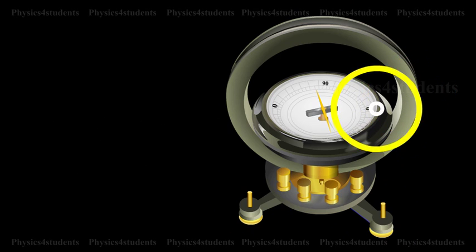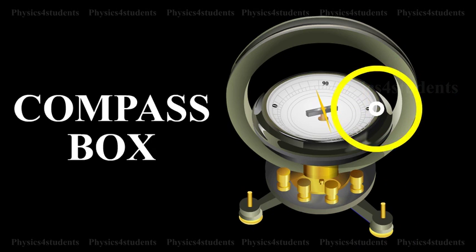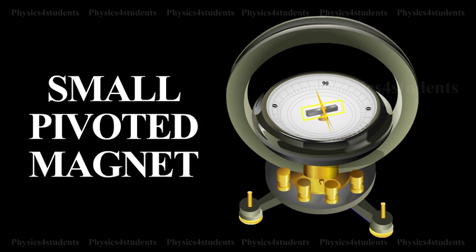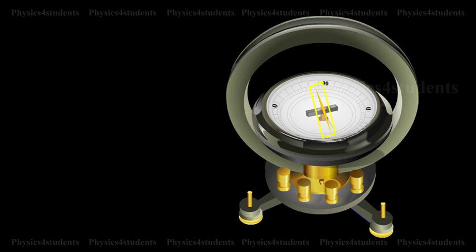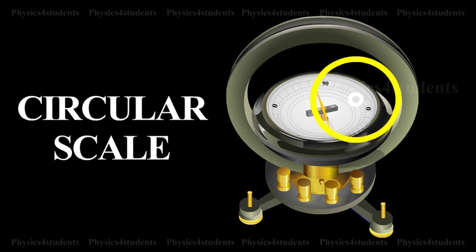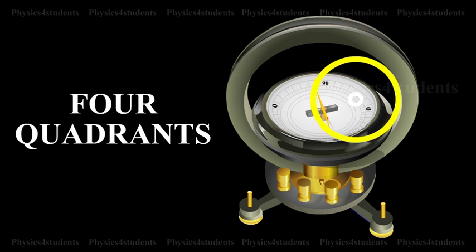There is a small upright projection at the center of the turntable on which a compass box is supported. The compass box consists of a small pivoted magnet to which a thin, long aluminum pointer is fixed at right angles. The aluminum pointer can move over a circular scale graduated in degrees. The scale consists of four quadrants.